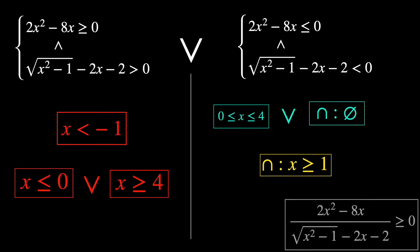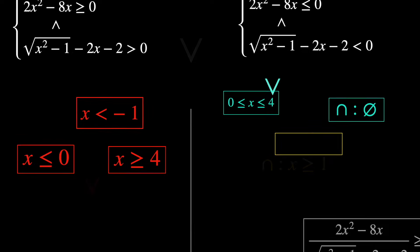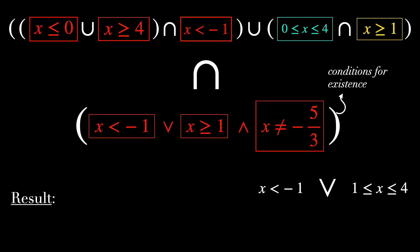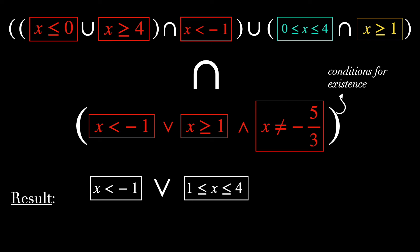The final step is to put everything together. We intersect (x ≤ 0 or x ≥ 4) with x < −1, then take the union with the intersection of 0 ≤ x ≤ 4 and x ≥ 1, and finally intersect with the conditions for existence. The final result is either x < −1, or 1 ≤ x ≤ 4.